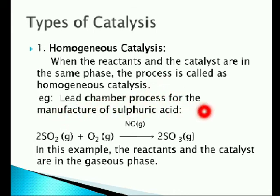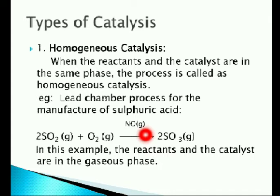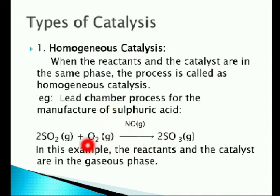Example: the lead chamber process for the manufacture of sulfuric acid. In this reaction, sulfur dioxide in gaseous phase and oxygen in gaseous phase combine together in the presence of nitric oxide in gaseous phase as the catalyst, resulting in the formation of sulfur trioxide gas. Here, the reactants and the catalyst are in the same phase, hence the type is homogeneous catalysis.